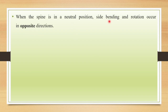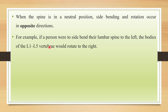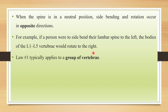The First Law states that when the spine is in a neutral position, side bending and rotation occur in opposite directions. This means that when the spine is in neutral position, if you laterally flex towards one side, there will be rotation occurring in the opposite side. For example, if a person were to side bend or lateral flex towards the left side of the lumbar spine, the bodies of the L1 to L5 vertebrae would rotate towards the right. The first law typically applies to a group of vertebrae.